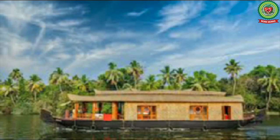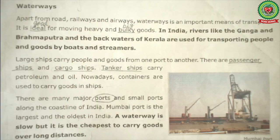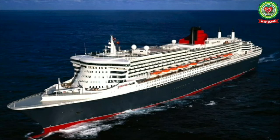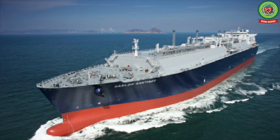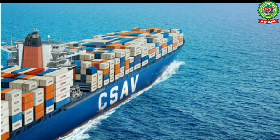Large ships carry people and goods from one port to another. A port is a place where boats come and go. There are passenger ships, cargo ships, and tanker ships. Tanker ships carry petroleum and oil. Underline 'passenger ships', 'cargo ships', and 'tanker ships' as these are our terms. Nowadays, containers are used to carry goods in ships.